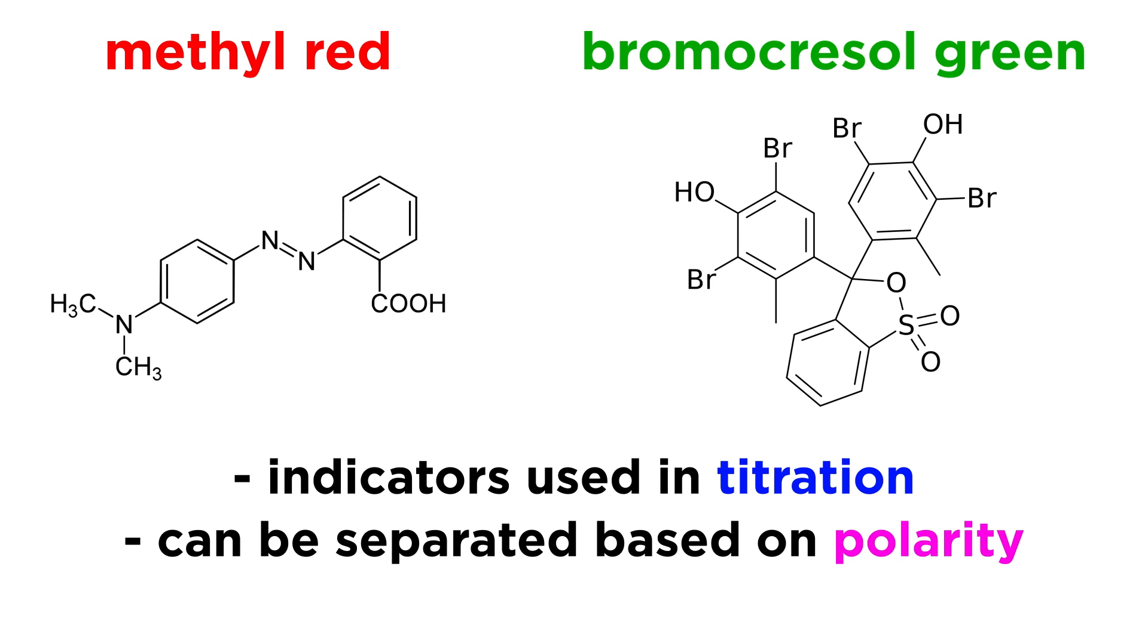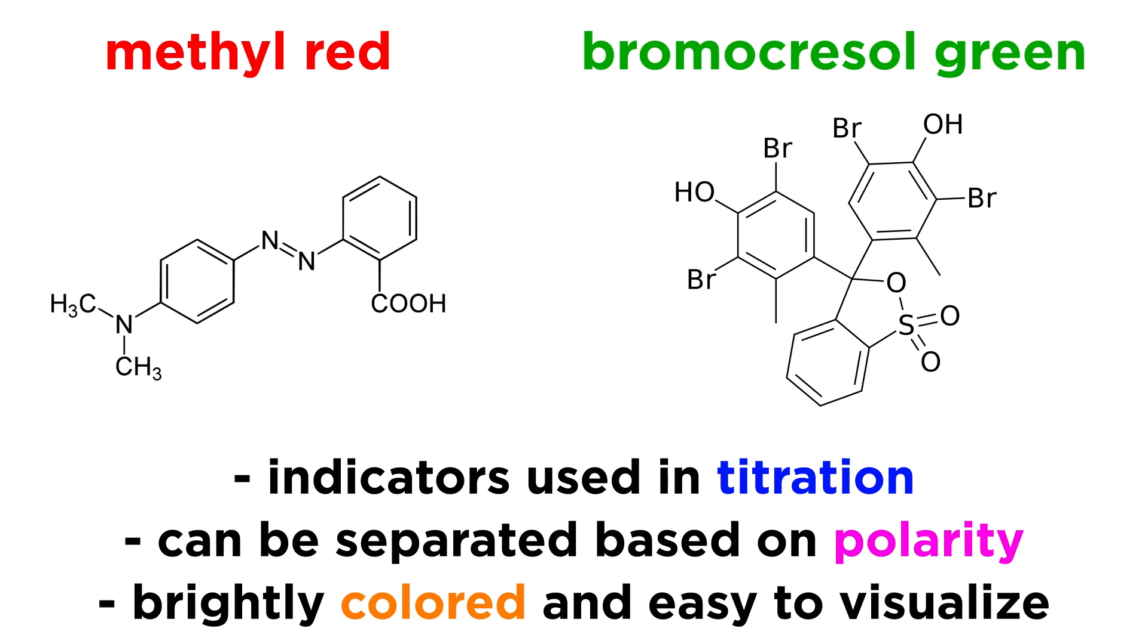You can see that bromocresol green has many polar groups, and that makes it more polar than methyl red. We are using these chemicals today because they are brightly colored, and we can therefore visualize them as they move through the column, which will help us understand what is happening. This will usually not be the case. Typically we can't see compounds as they move through the column, which makes things more challenging.